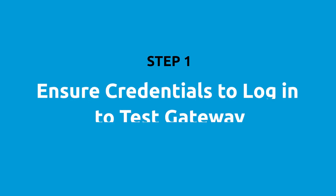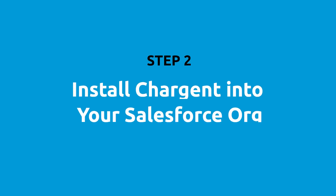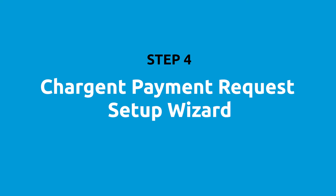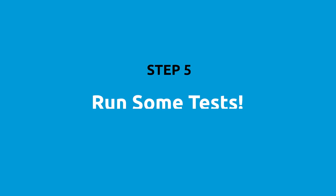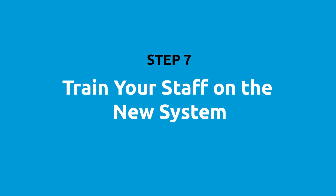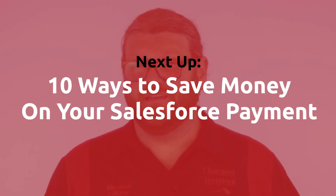Here are the steps. Step one: ensure that you've got credentials to log into your test gateway. Step two: install Chargent into your Salesforce org. Step three: use the Chargent gateway setup wizard to set up that gateway inside of Salesforce. Step four: use the Chargent payment request setup wizard to get your payment request site ready. Step five: test everything by running tests in your system. Step six: customize this to meet your processes.